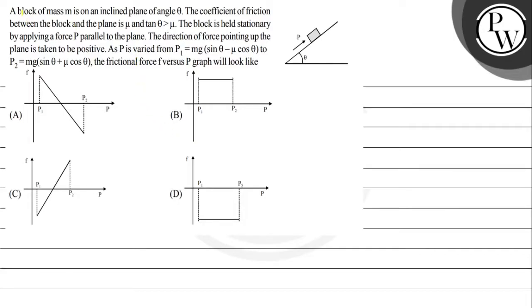Let us see the question. The question says a block of mass M is on an inclined plane of angle theta. The coefficient of friction between the block and the plane is mu, and tan theta is greater than mu. The block is held stationary by applying a force P parallel to the plane. The direction of force pointing up the plane is taken to be positive. As P is varied from the first value to the second value, the frictional force F versus P graph will look like...